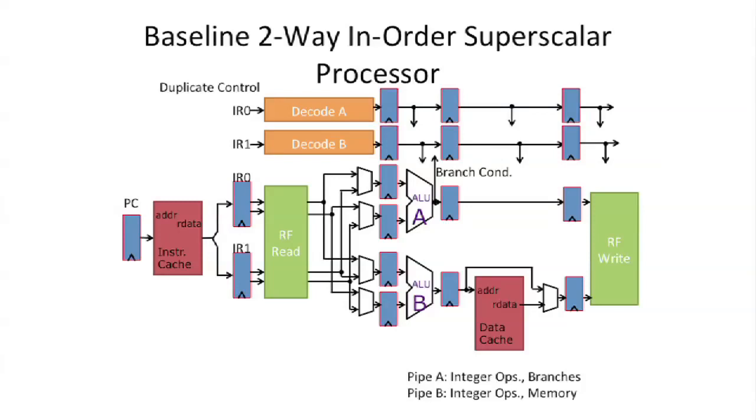Another thing you have to do is on the control side, you have to actually start thinking about duplicating control. So here, we actually have to have two decoders, because we're decoding two instructions at the same time. So the instruction register wires up to decode A, and this instruction register wires up to decode B, and then they're going to drive signals down across the respective A and B data paths.